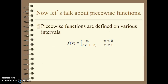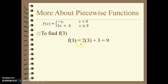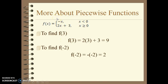Now we're going to look at piecewise functions. Piecewise functions are defined on various intervals. For this one, when x is less than 0, our graph is negative x; when x is greater than or equal to 0, our graph is 2x plus 3. To find f(3): since 3 is greater than 0, we use 2x plus 3, plug in 3 for x, and get 9. To find f(negative 2): since negative 2 is less than 0, we use negative x — negative times negative 2 gives positive 2.